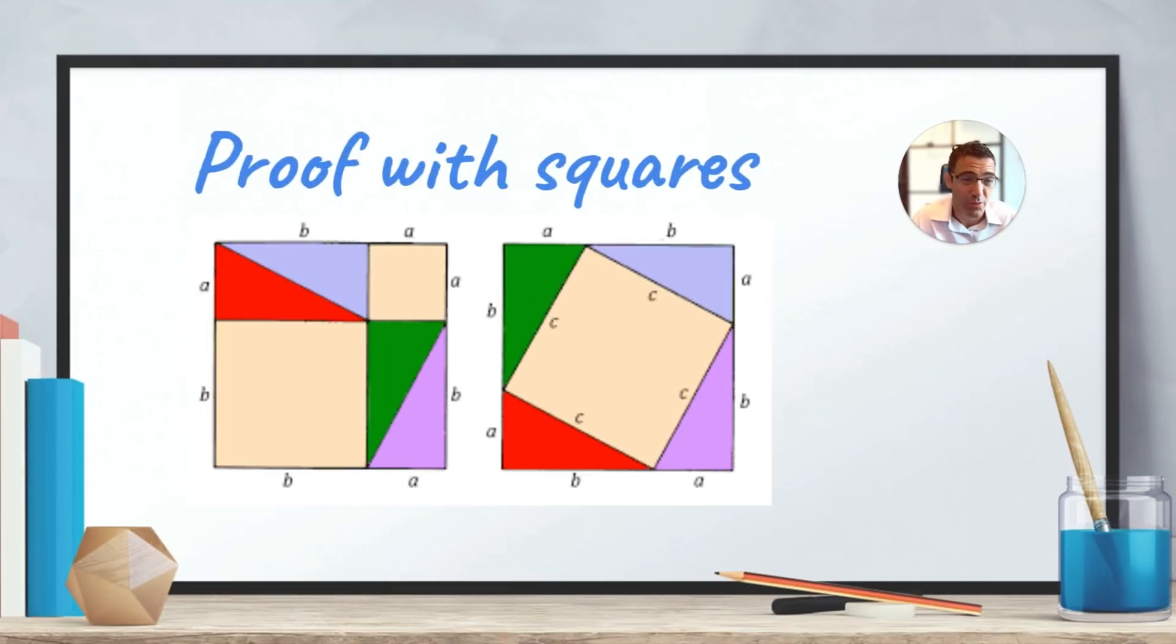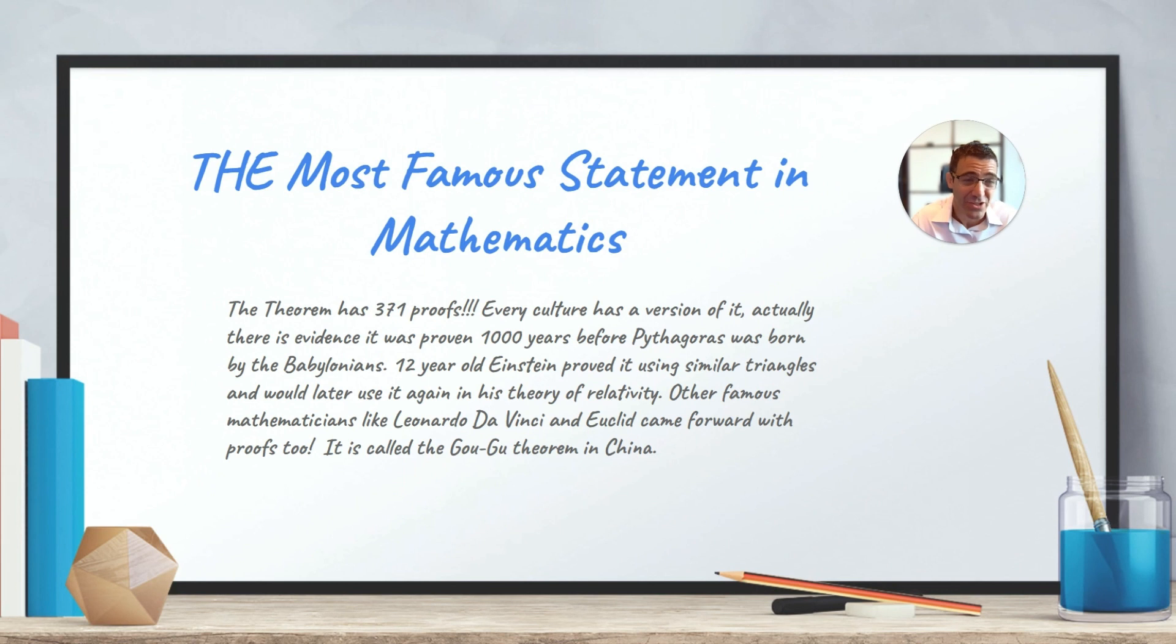There is also a proof with squares here. If you rearrange the squares, and if you'd like to do this, you can pause the video right now, and you can rearrange the squares in part A to see that they fit with part B. This is quite a famous proof. It's a Euclidean proof.